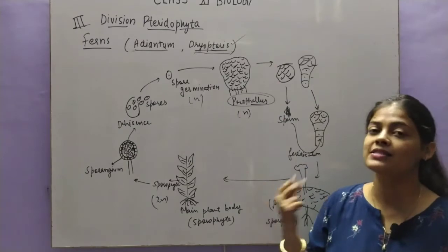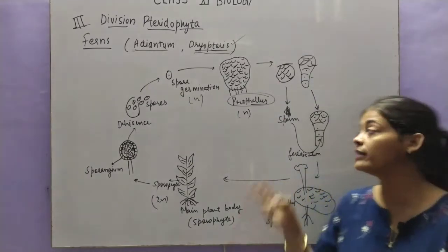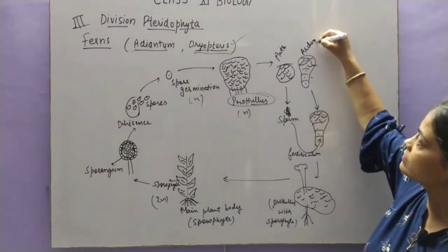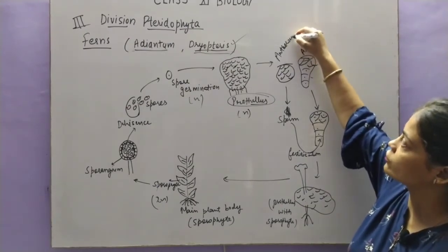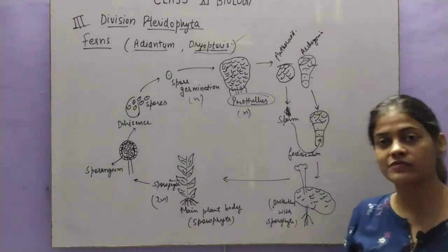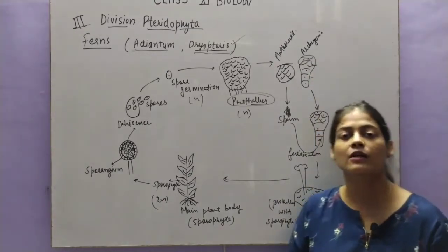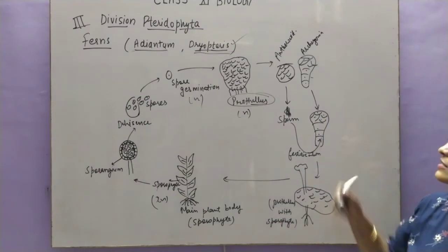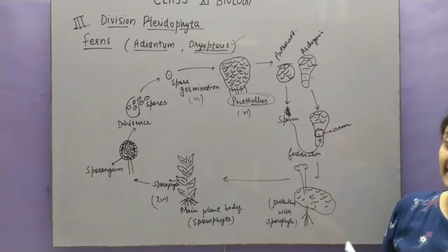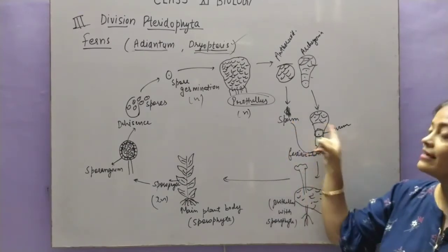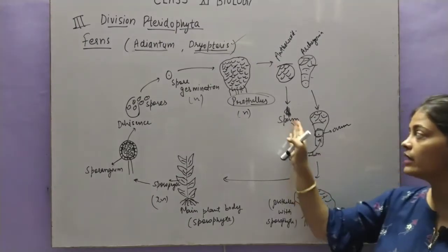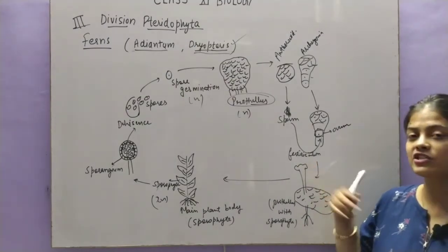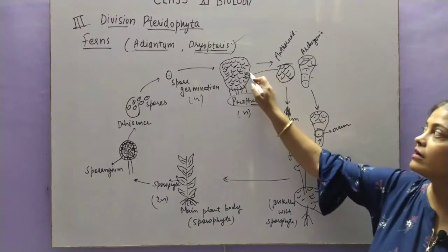Just as we studied in bryophytes, the prothallus has archegonia and antherozoid. Inside the antherozoid, sperms will be formed, and inside the archegonia a single ovum will be formed. The sperms will enter inside the archegonia and fertilization will take place. After fertilization, a zygote will be formed, and this structure remains attached with the prothallus.